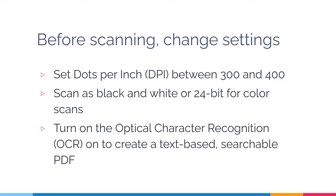To clarify: when referring to scanner settings, I was referring to software. If you don't have Adobe Acrobat, use the software that came with your scanner to apply these settings. The DPI settings are generally in the software, not the scanner itself, though some scanners allow quick settings directly on the device. The name of the free screen reader for Mac users is VoiceOver — it's included with the Mac operating system, found under Accessibility in System Settings, and comes with a tutorial and practice area.